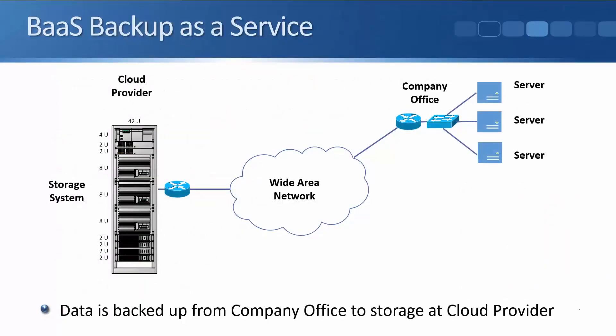The first example is BaaS, backup as a service. This is suitable for small companies because it allows them to back up to an off-site location without having to go through the hassle of buying tape hardware and transporting tapes off-site every day. With backup as a service, the company has their own on-premise solution — servers in their own office — backed up to storage at the cloud provider. The customer often will not have any actual servers at the cloud provider; they just make use of the storage there.